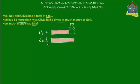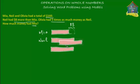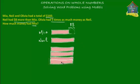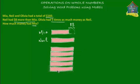Now who's the third person? The third girl is Olivia. So how much money does Olivia have? Olivia had 5 times as much money as Neil. That's simple — we just put this pink bar 5 times. So 1, 2, 3, 4, and 5. Olivia has 5 times as much money as Neil. This is Olivia's money.